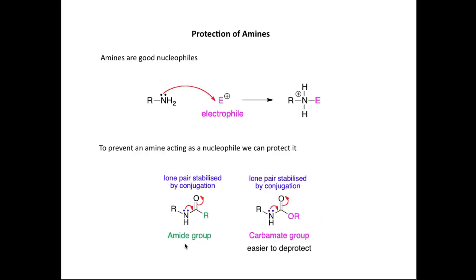A classic way of protecting an amine is to convert it into an amide group. In the amide group, the lone pair on the nitrogen is stabilized by conjugation — we can delocalize the lone pair from the nitrogen onto the oxygen. As we stabilize this lone pair, it makes it much less nucleophilic, so an amide is a much less nucleophilic group than an amine. One problem with using amides as a protecting group in synthesis is that we need quite harsh conditions to break the amide bond to recover the amine at the end of the reaction.